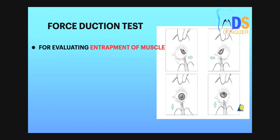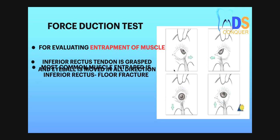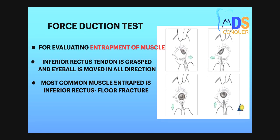This can come as an image-based question. This is the force reduction test to check for the entrapment of the muscle. The tendon of the inferior rectus is grasped and the eyeball is moved in all directions to check for entrapment. The most common muscle entrapped in floor fracture (blowout type) is the inferior rectus, which can cause diplopia — that is, post-traumatic diplopia.